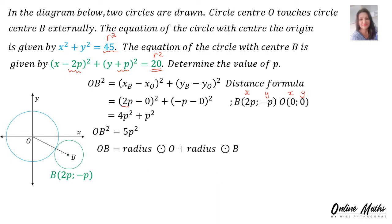We can also say that OB equals the radius of the circle with center O plus the radius of the circle with center B. The radius of the circle with center O: r² = 45, so r = √45. The radius of the circle with center B: r² = 20, so r = √20. Therefore OB = √45 + √20. Simplifying: √45 = 3√5 and √20 = 2√5, so 3√5 + 2√5 = 5√5.